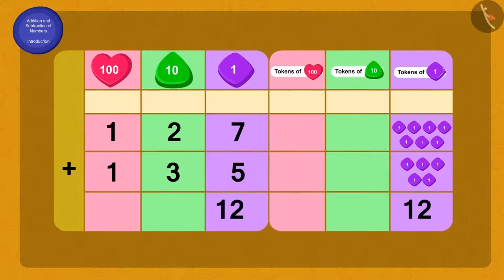How will we write 12 ones? That's correct! Using the carryover method, 10 tokens of 1 can be written as 1 token of 10 in the tens place.